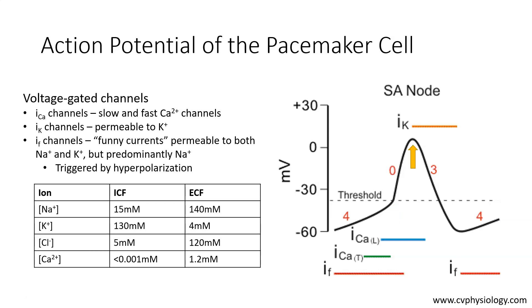At the peak of the action potential, voltage-gated potassium channels open, and due to the gradient, potassium leaves the cell, causing a hyperpolarization of the membrane.